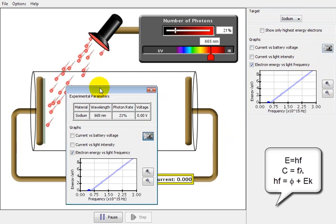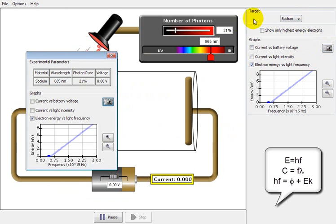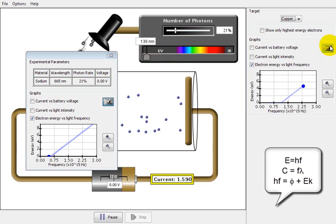Different metals have different threshold frequencies. If I change the metal, we can see that the energy where electrons start to be emitted is slightly different.